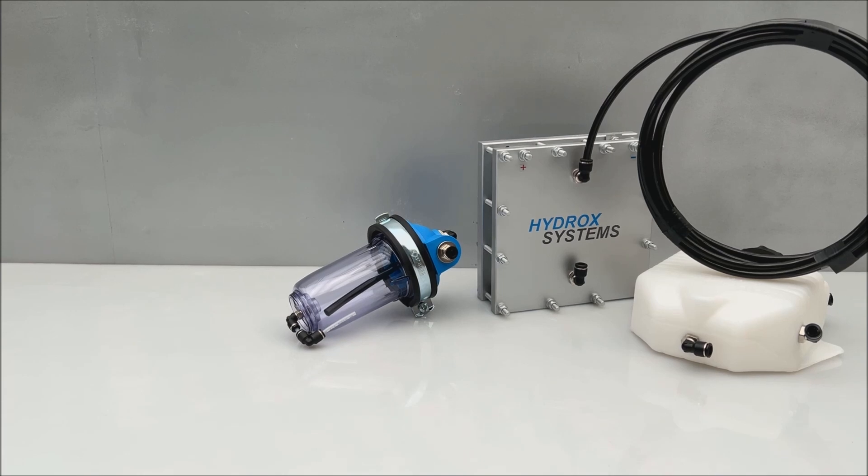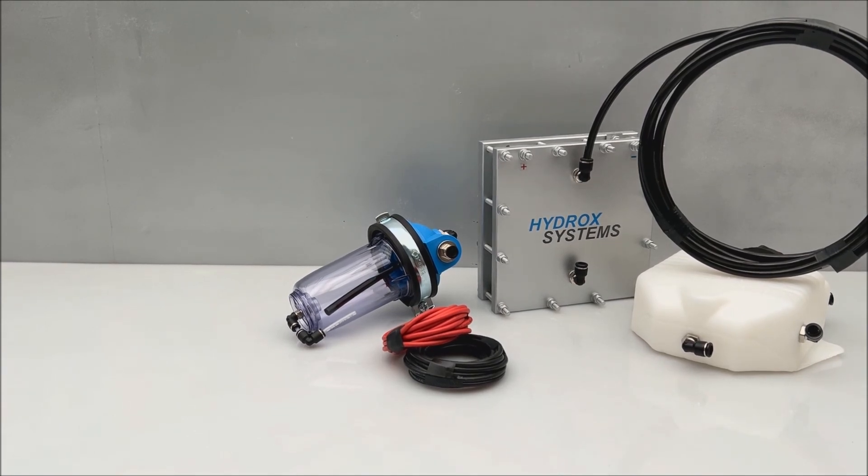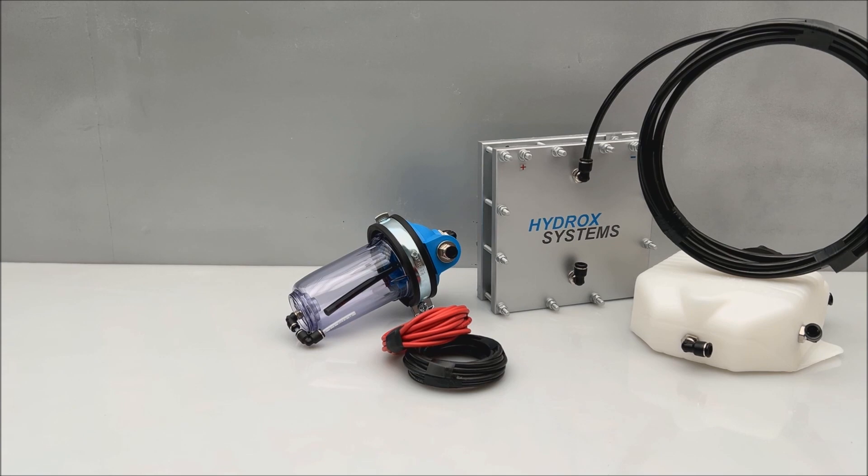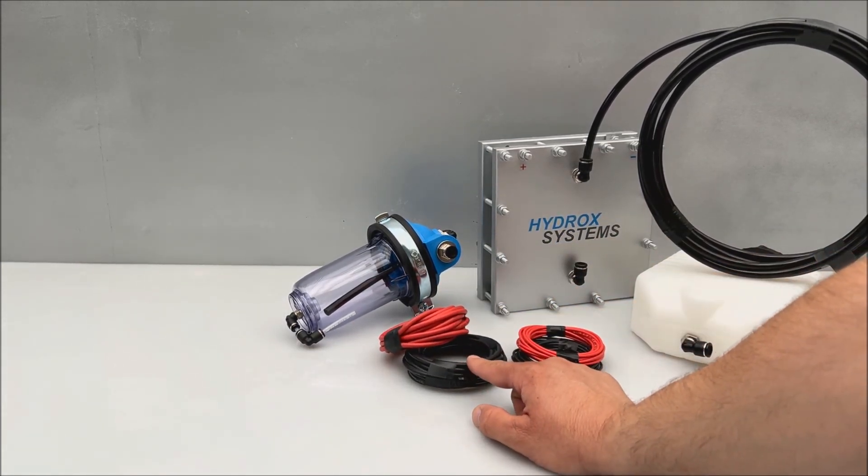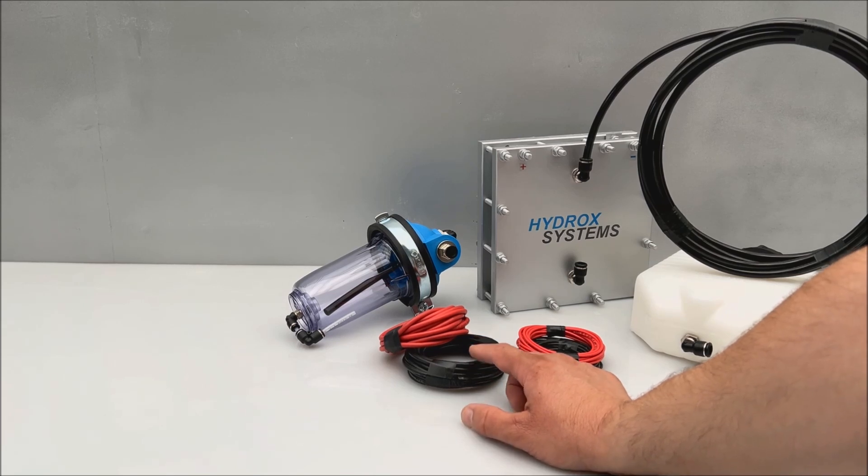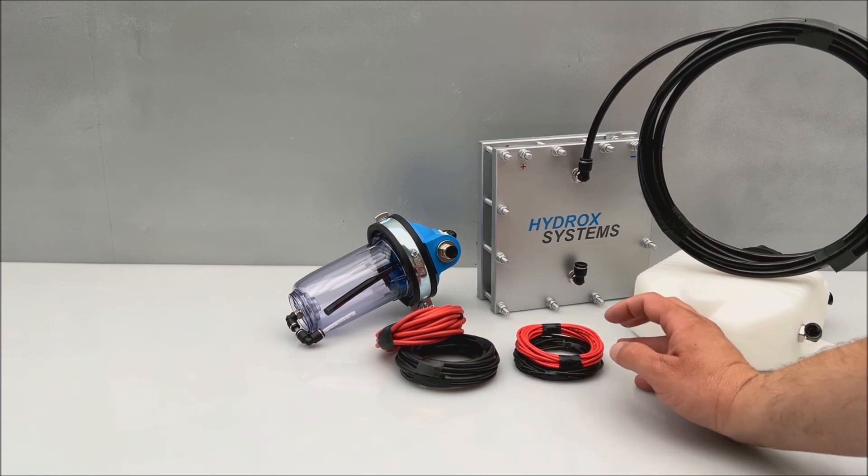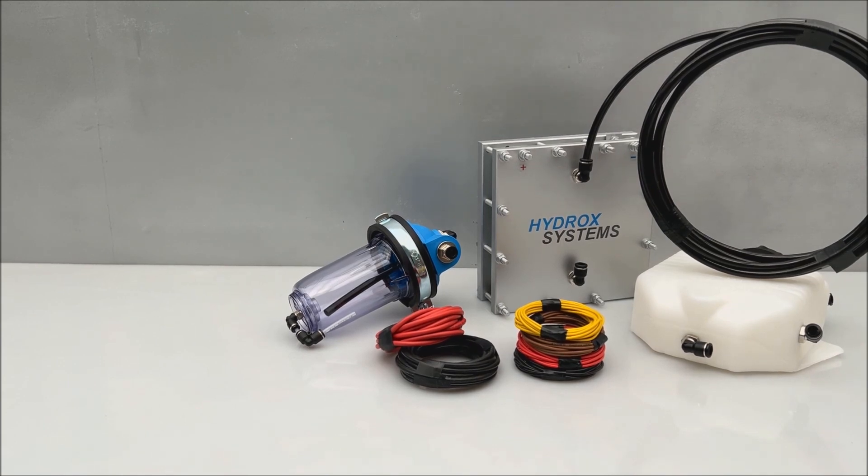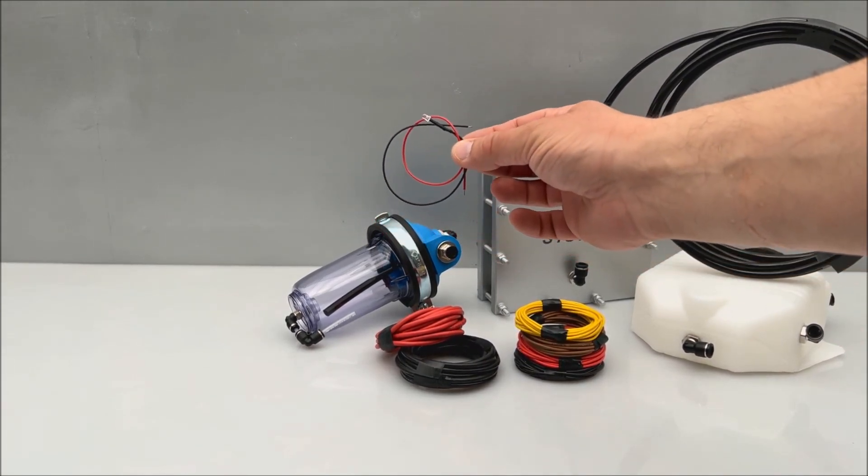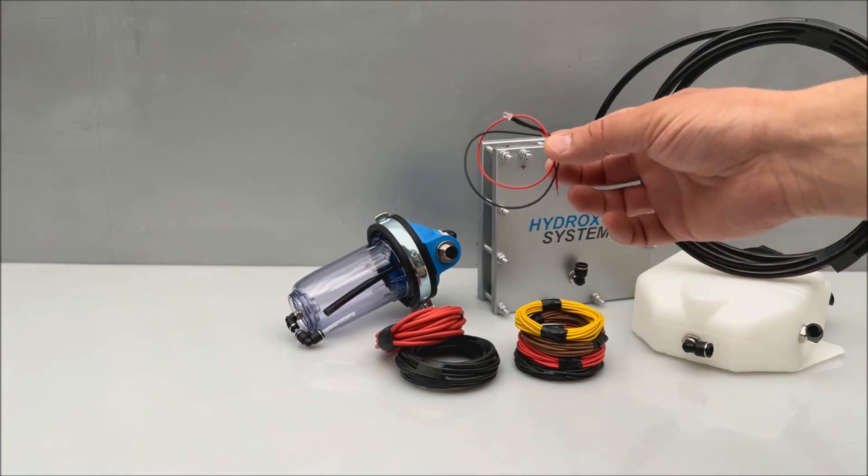We have the main wires positive and negative, colors red and black of course. These are six square millimeter section because they carry more load. These are only control wires so they are one square millimeter section. We have another two for the light indicator which must be installed near the dashboard of your vehicle, so you can see when the system is working, when it's not working.